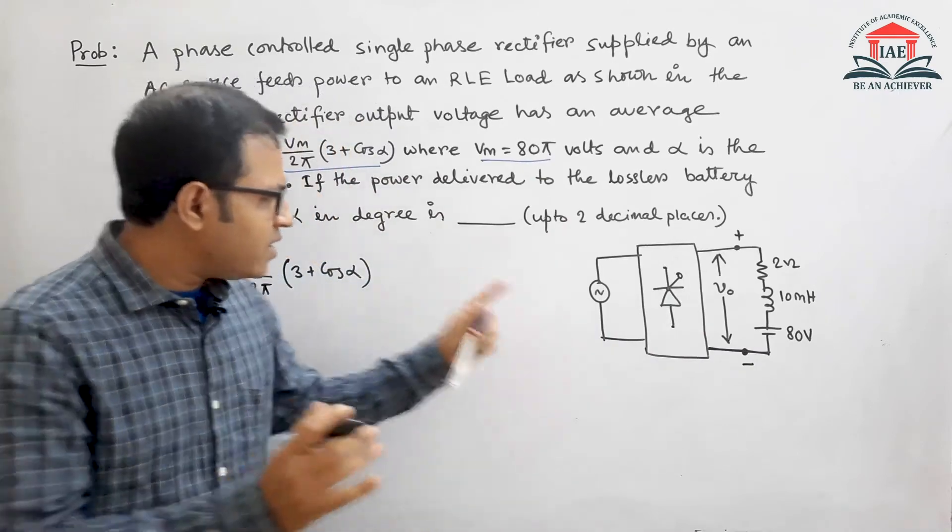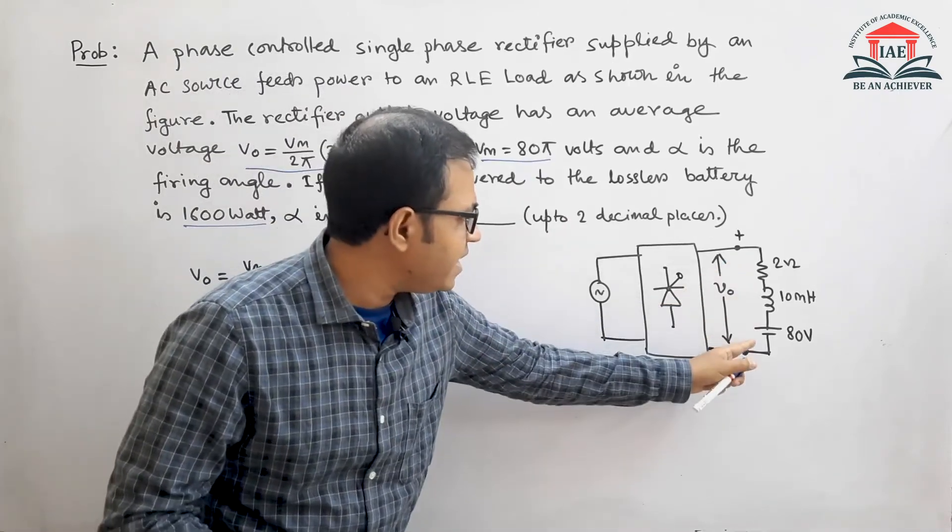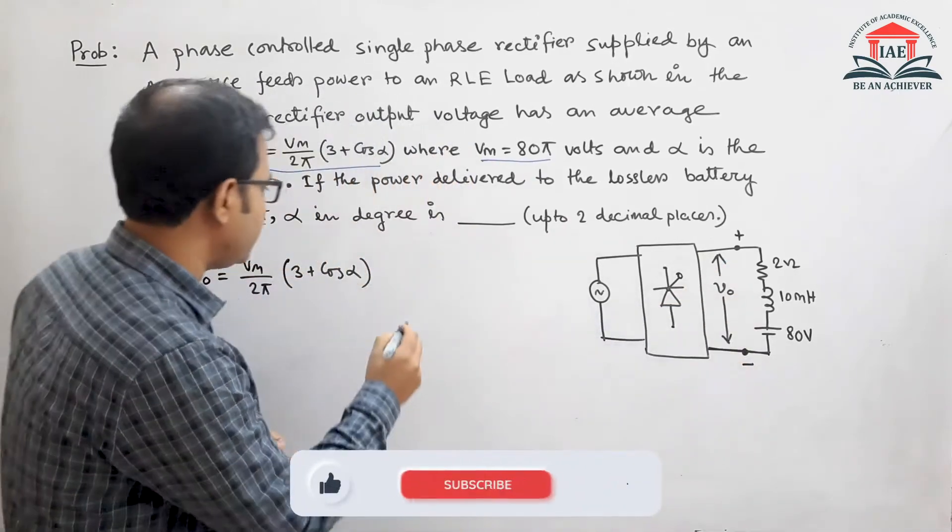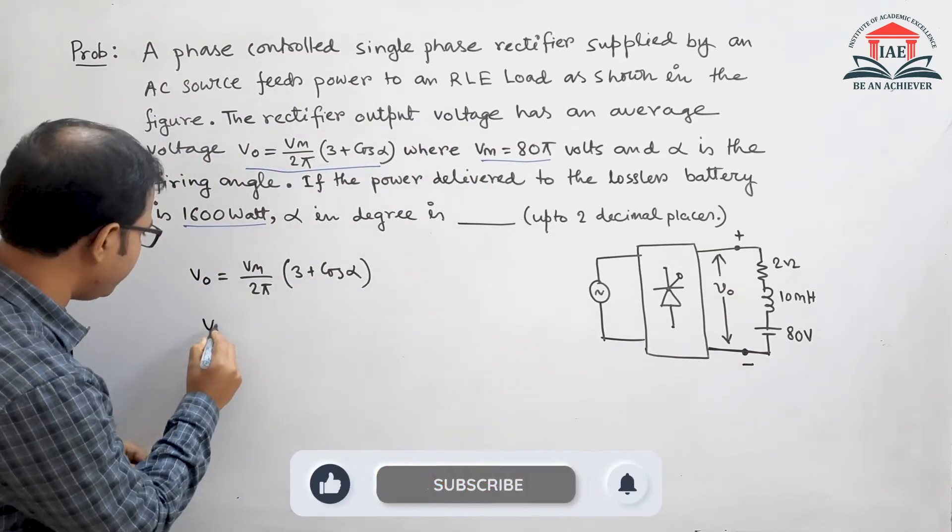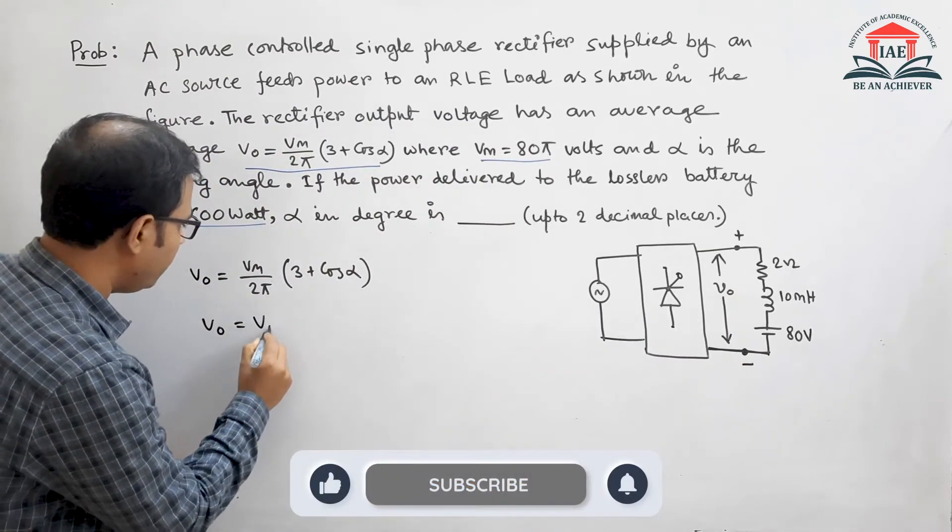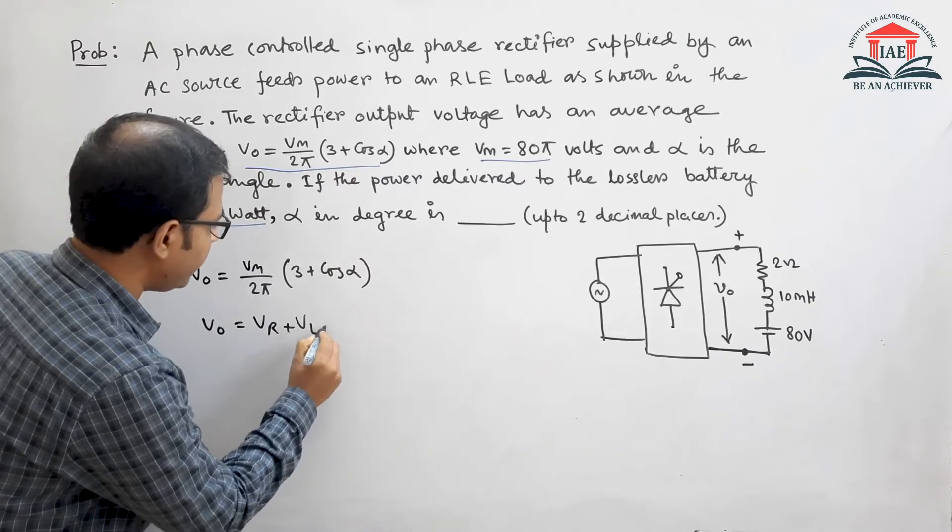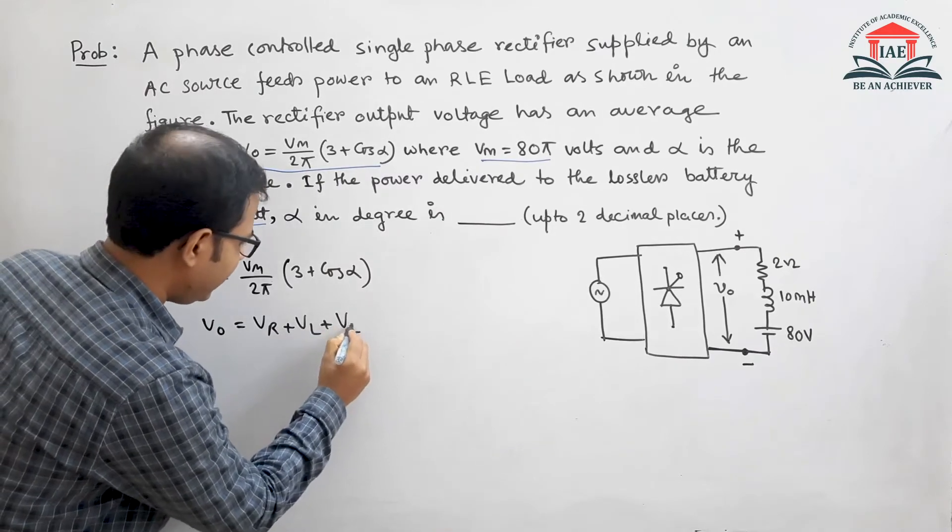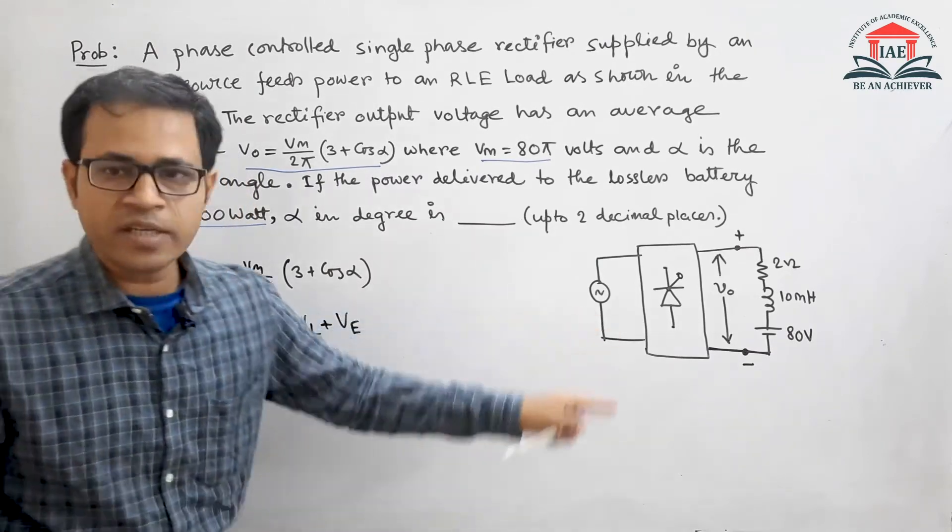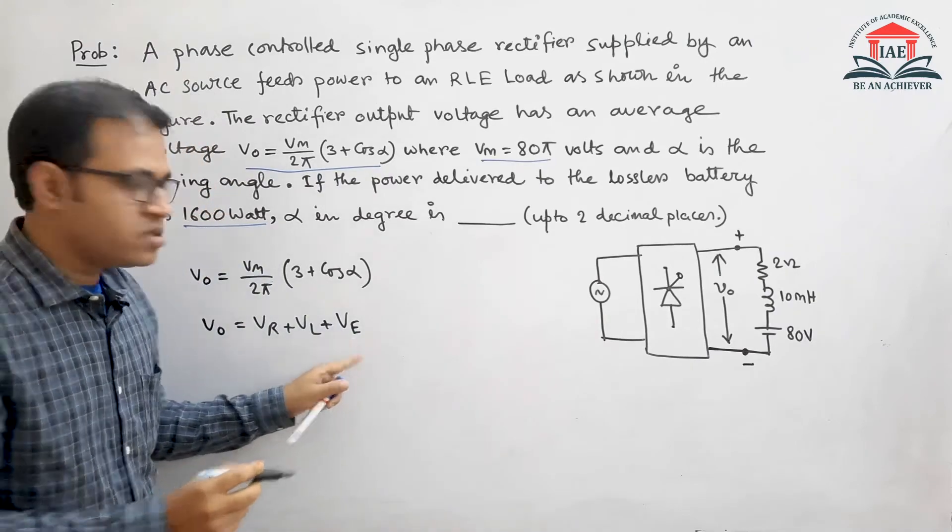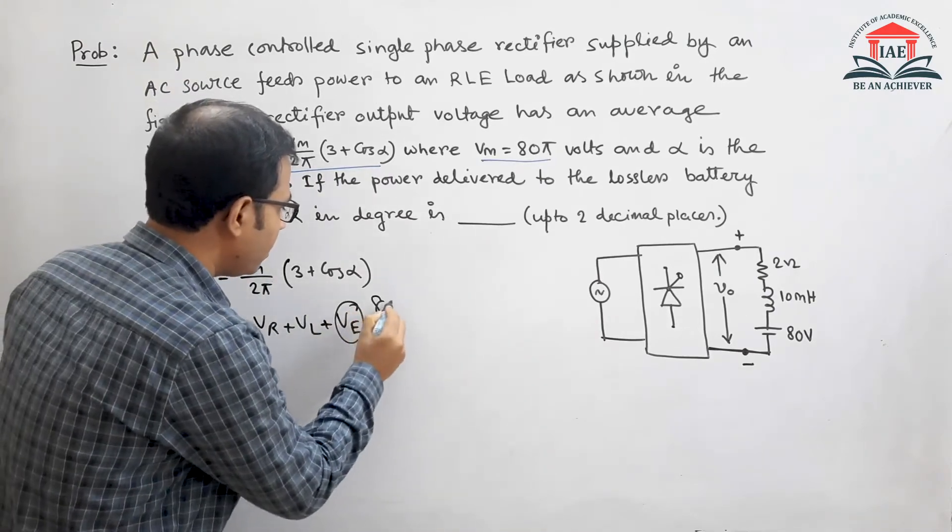What data is given? RLE is the load. So we can say the output voltage must be V0 equals Vr plus VL plus VE. Let us say VE is the battery voltage, which is known to us as 80 volts.